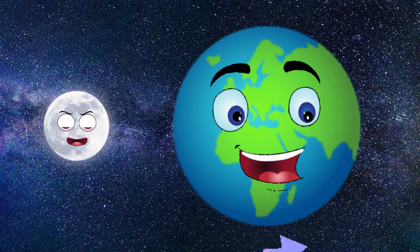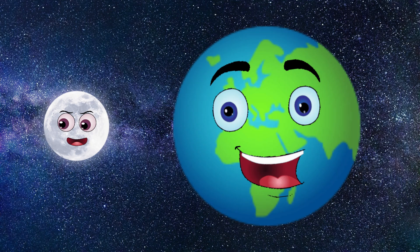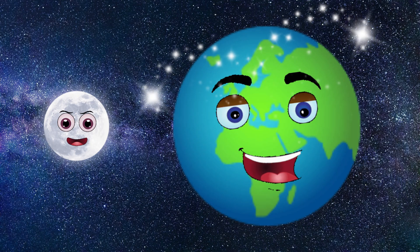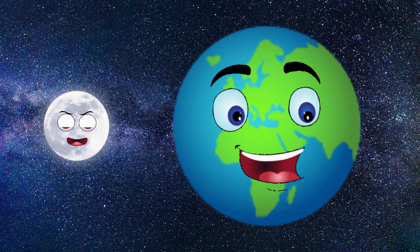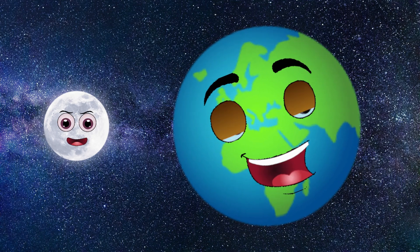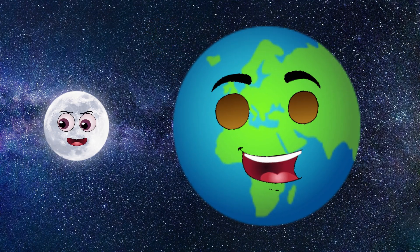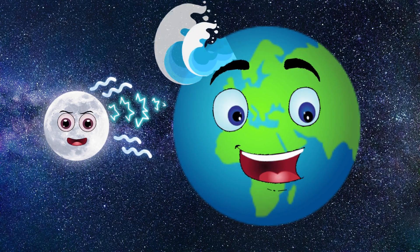And our moon travels around our planet every 28 days. The moon makes Earth a more liveable planet by moderating our home planet's wobble on its axis, leading to a relatively stable climate. It also causes tides due to its gravitational pull.